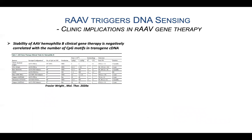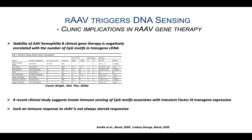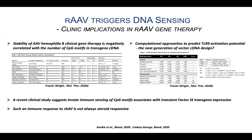In terms of clinical implications of AAV DNA sensing, Fraser Wright did a retrospective study suggesting that stability of AAV hemophilia B clinical gene therapy is negatively correlated with the number of CpG motifs in the transgene cDNA. A more recent study with hemophilia B gene therapy suggests the same. Importantly, such an immune response to AAV is not always steroid-responsive. Fraser also proposed that a computational approach to predict TLR9 activation potential could be the next generation of vector cDNA design.